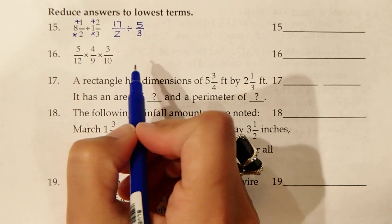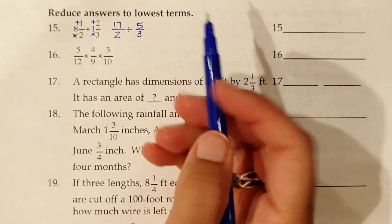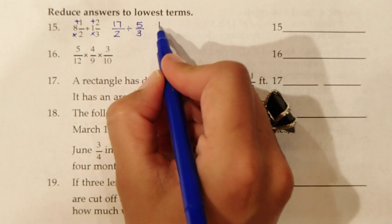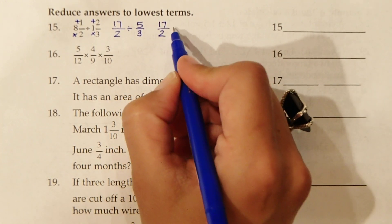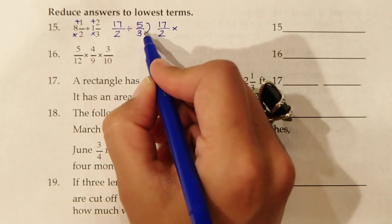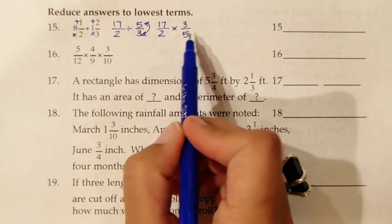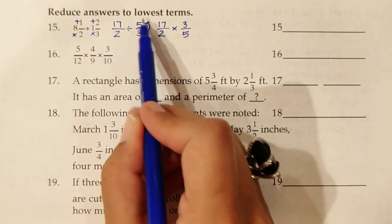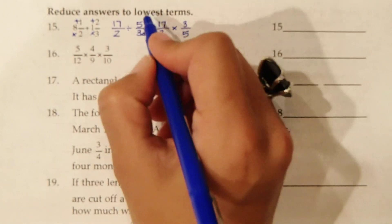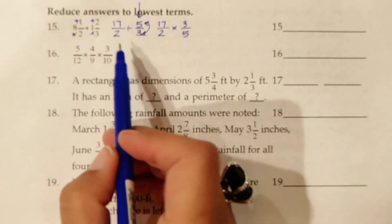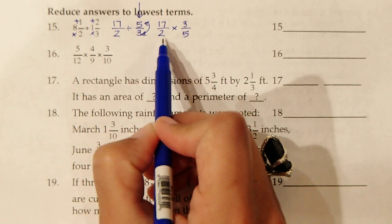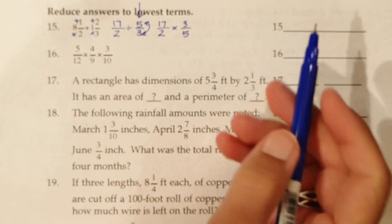Divided by 3 times 1 is 3, plus 2 is 5, over 3. Now, to divide fractions, we're actually going to multiply and flip the second fraction. We're multiplying by the reciprocal, or the flip, of the second fraction only. It must be the second fraction.